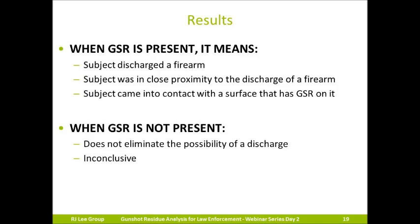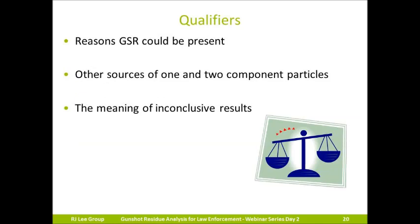When no particles are found, or only one- and two-component particles are found, the results are deemed inconclusive. We don't call this a negative result. The absence of characteristic particles does not necessarily mean the subject did not discharge a firearm — it's possible that particles were on them at one point but were removed by factors previously discussed. Because of this, we term results with no characteristic particles as inconclusive. Along with analytical results, every GSR report includes a section called qualifiers, which qualifies the results and aids in interpreting their meaning.